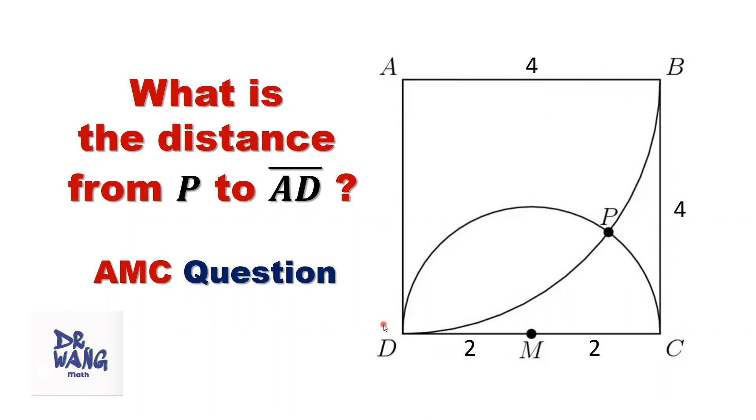This is a given square with side 4. We use M as the center. From here to here, that's 2. From M to C also is 2. Draw a semicircle with radius 2. Use A as the center and 4 as the radius to draw a quarter of a circle. The two circles have an intersection point P.